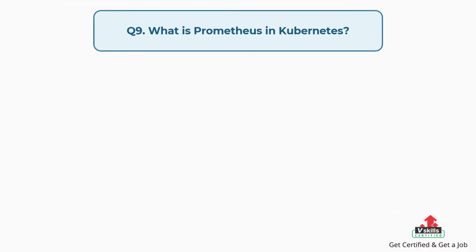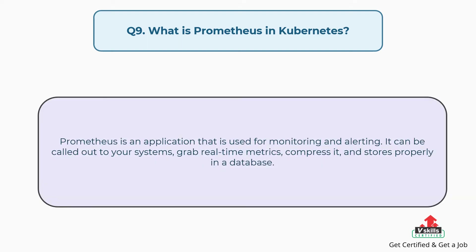Question number nine: What is Prometheus in Kubernetes? Prometheus is an application that is used for monitoring and alerting. It can be called out to your systems, grab real-time metrics, compress it, and store it properly in a database.